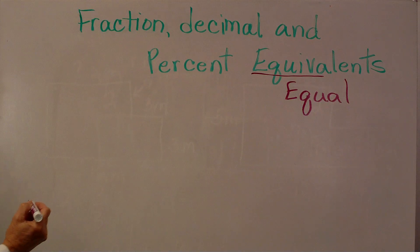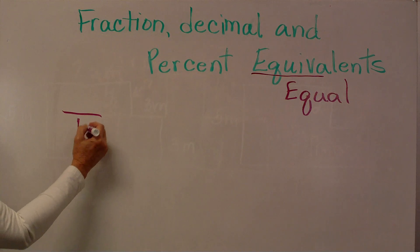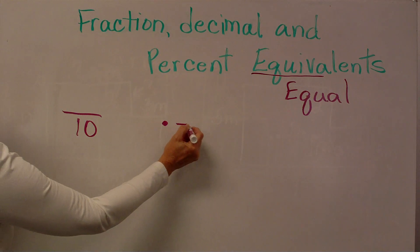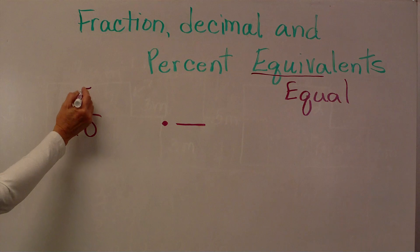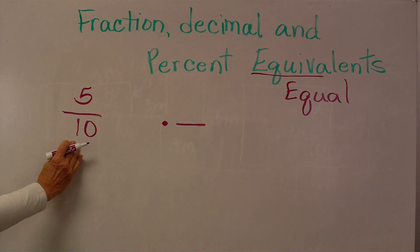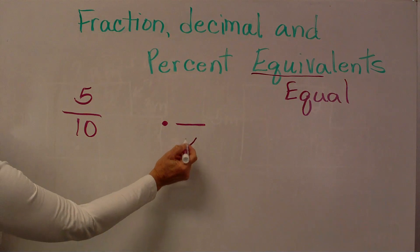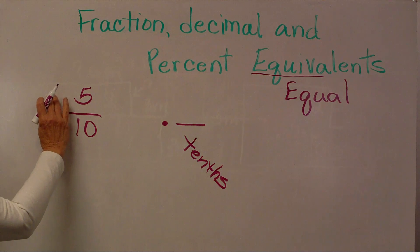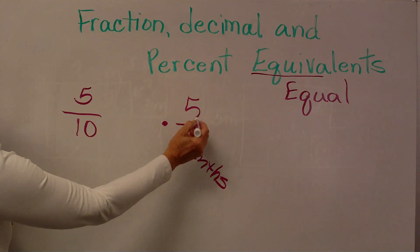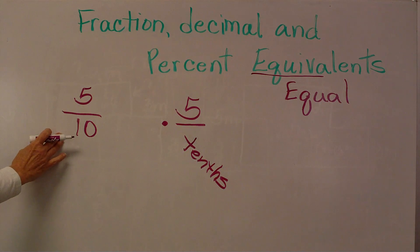We're going to start with a fraction that has a decimal equivalent that uses a place value similar to what we know in working with decimals. If I were to ask you to make a fraction of 5 tenths, 5 is my numerator and 10 is my denominator. In decimal format, the first place after the decimal is tenths. So I can take my numerator 5, write it one spot after my decimal point, and that represents the same thing as my fraction, 5 over 10.